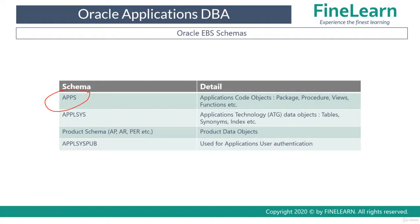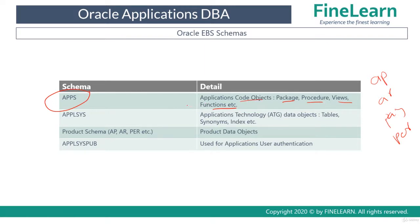What does the Apps Schema basically contain? The Apps Schema contains all the code objects. Code objects means all the packages, procedures, views, and functions related to all the products. In Oracle E-Business Suite there are many products — for example, Accounts Payables, Accounts Receivables, Payroll, and PER which is HR. All the product-related code objects are in the Apps Schema.